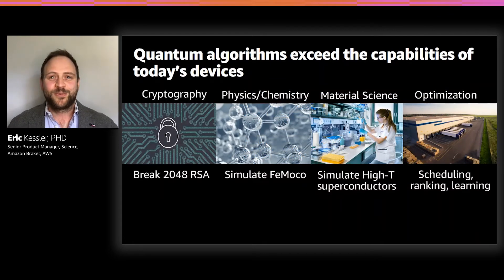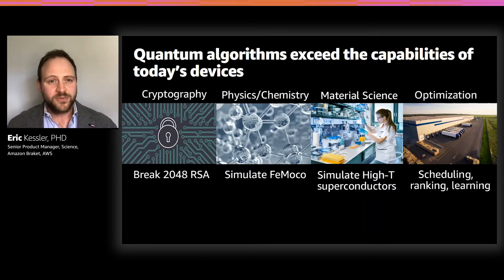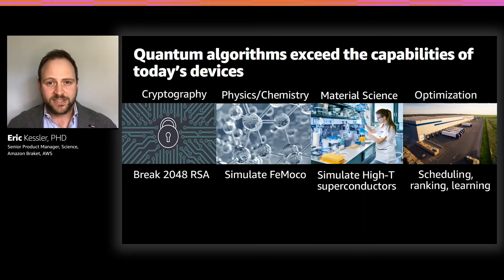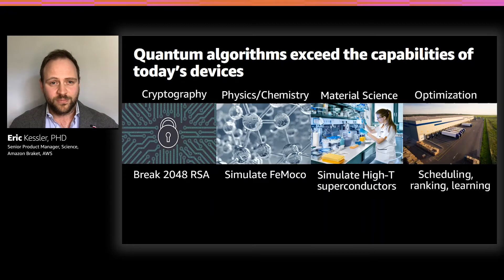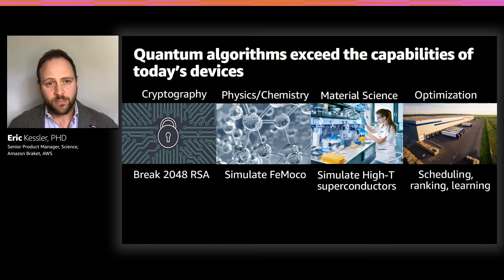So now, what makes quantum computing such a transformative technology? Well, the answer is that if we had large-scale, fault-tolerant quantum computers, we could not only make things faster, but we could really solve things that are practically not solvable today on classical computers and won't be solvable in the future. So it would be a true paradigm shift and a really new approach to performing computations.